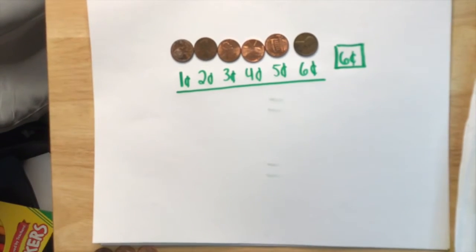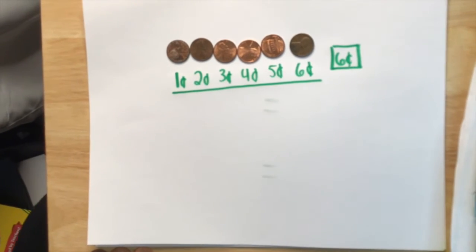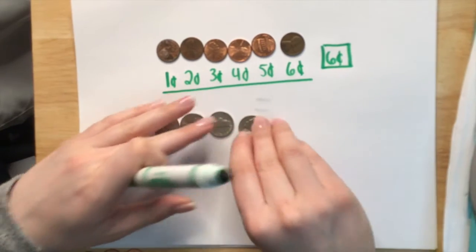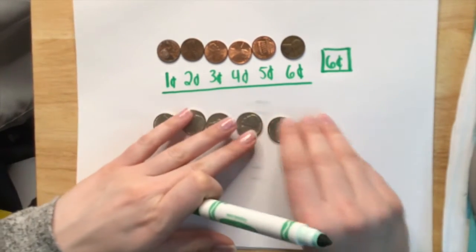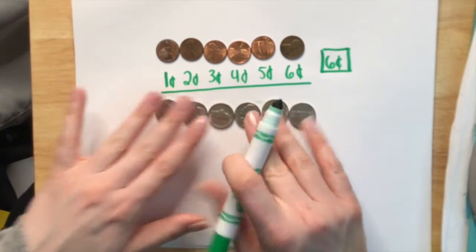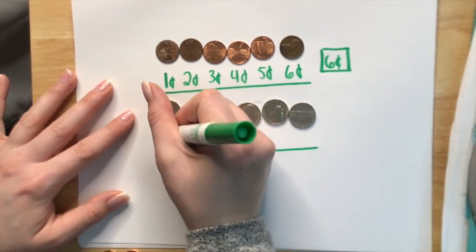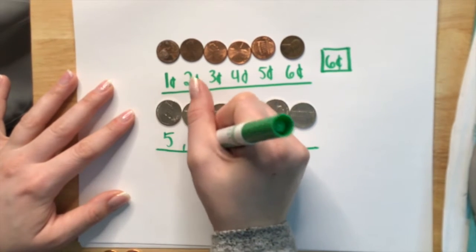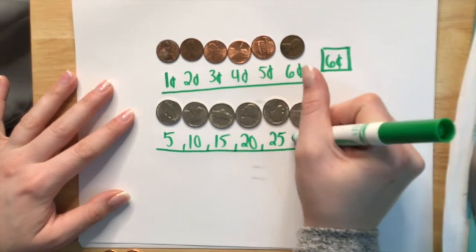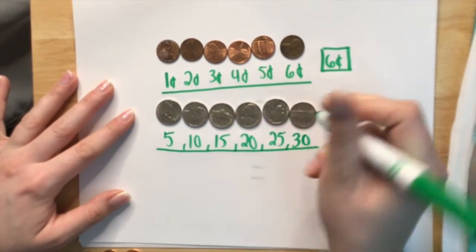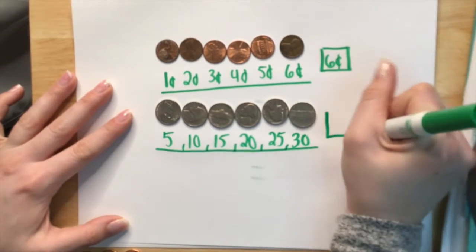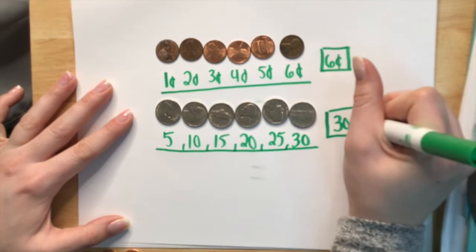Now if we were to count just nickels by themselves, I'll put a group of them down here. When we count nickels, we count in fives because we know that they're worth five. So I'm going to go ahead and draw a little line down here and count by fives. We have five, 10, 15, 20, 25, and 30. You see how I just, each nickel is worth five. So I just counted up by five. And that means that we have here 30 cents.